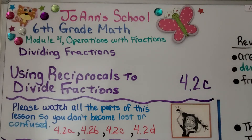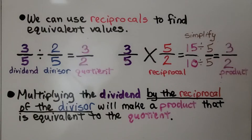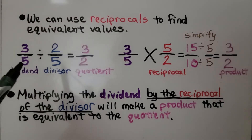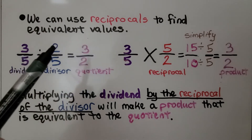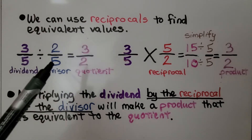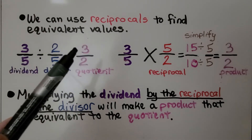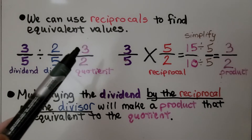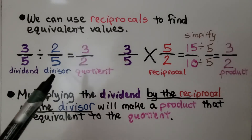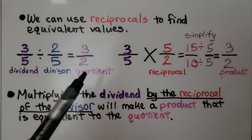Lesson 4.2c: Using Reciprocals to Divide Fractions. We can use reciprocals to find equivalent values. We have three-fifths divided by two-fifths, and it's telling us that the quotient is three-halves. We have the dividend, the divisor, and the quotient.